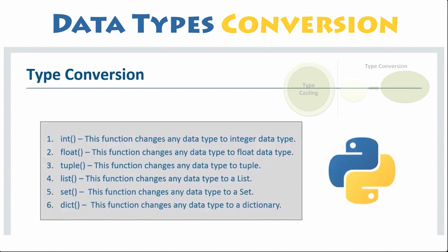Basically, type casting is the process of changing one data type into another. Using these constructors, you can use various data types with the functionality of the other.